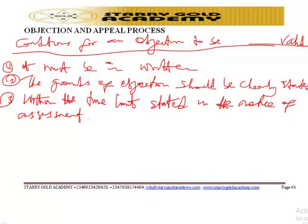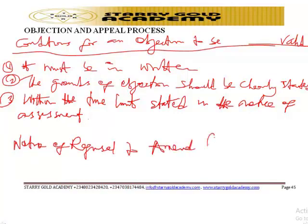If a valid objection is made, the board will attempt to settle the disagreement with the taxpayer. If an agreement is reached, the assessment will be amended accordingly and a notice of amended assessment will be served on the taxpayer. But if no agreement is reached, the board will issue a notice of refusal to amend — otherwise known as an NORA.